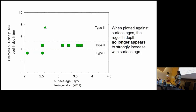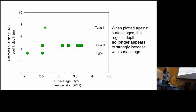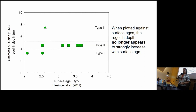Replotting regolith depth against actual surface age, you can see the type 2 surfaces cover a wide range of ages, and around 2.5 billion years there is a stack of a wide range of regolith depths at the same age. It is no longer clear whether this data really supports the depth-age hypothesis. Other authors since Oberbeck and Quade have also claimed their regolith depth measurements support the depth-age hypothesis.